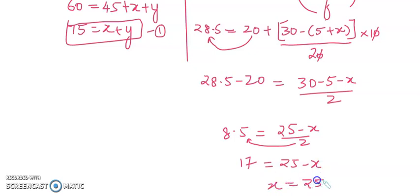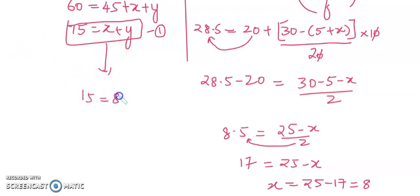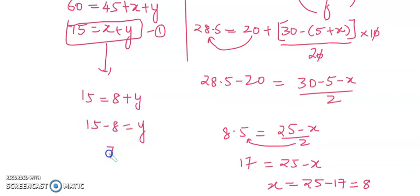So x equals 25 minus 17 which is 8. Substituting into x plus y equals 15: 15 equals 8 plus y, so y equals 15 minus 8 which is 7. We got our x and y: y is 7 and x is 8.